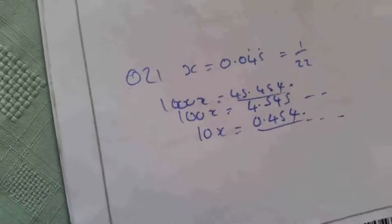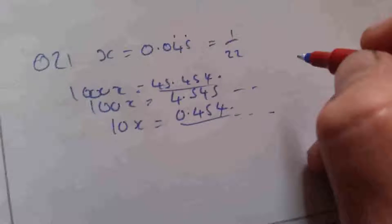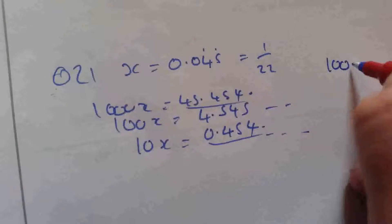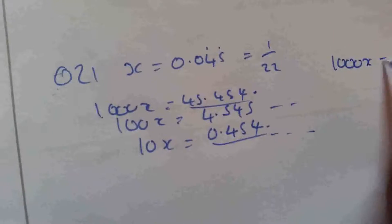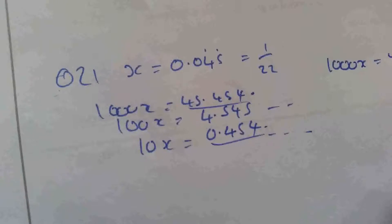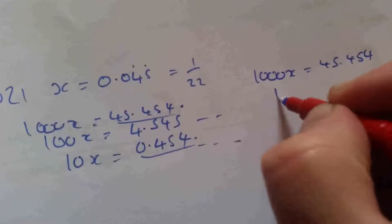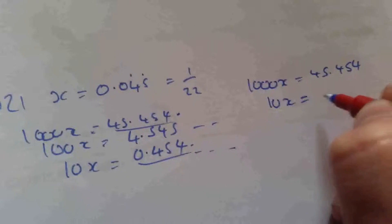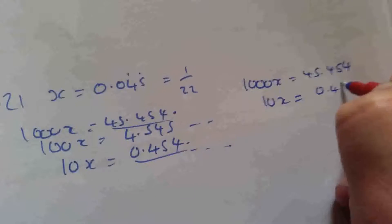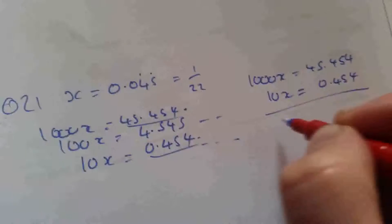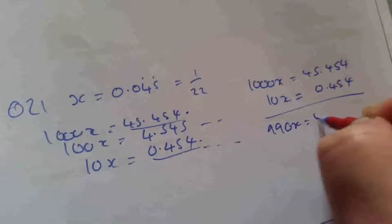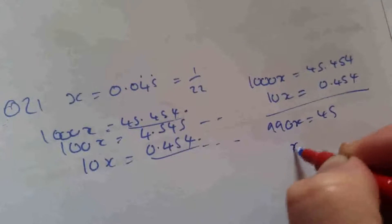Once I've got those matching decimals, I'm going to subtract them. So I have 1000x = 45.454... minus 10x = 0.454... If I subtract them, I get 990x = 45.